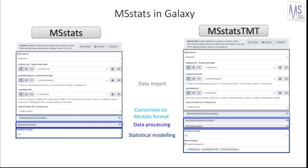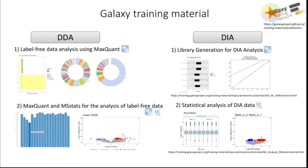All functionalities and parameters of the MSstats and MSstats TMT R packages are available in Galaxy. To learn how to use MaxQuant and MSstats for quantitative proteomics analysis in Galaxy, we have created four trainings in the Galaxy Training Network that cover not only classical shotgun DDA proteomics, but also data-independent acquisition, short DIA, types of experiments.